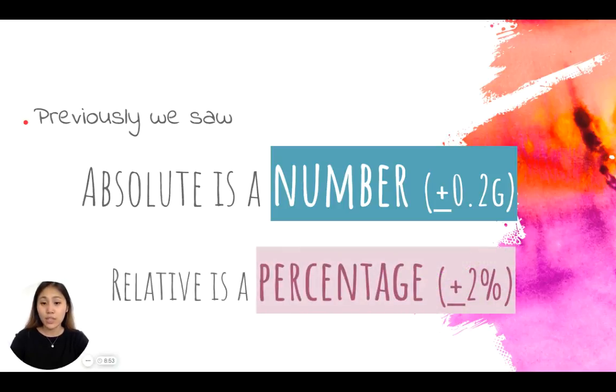Relative uncertainty is expressed as a percentage. So as you can see, the difference here is 0.2 grams with the unit of measurement as the absolute, and relative is expressed as two percent.